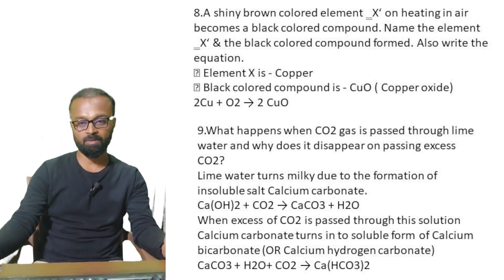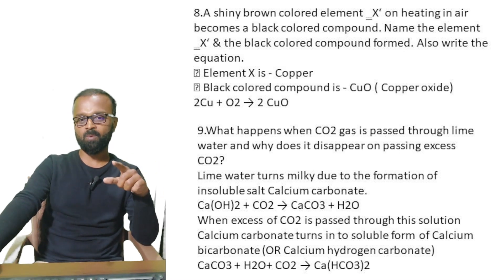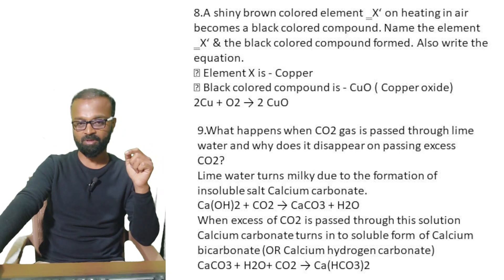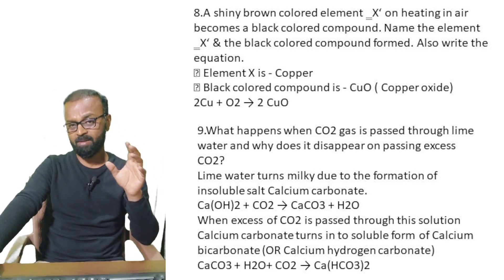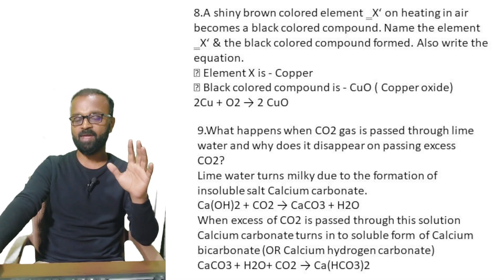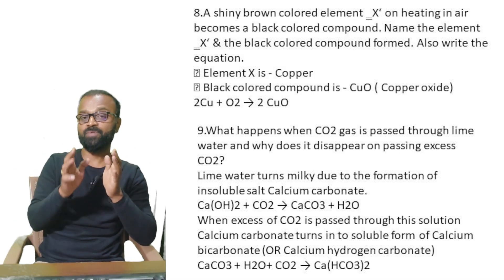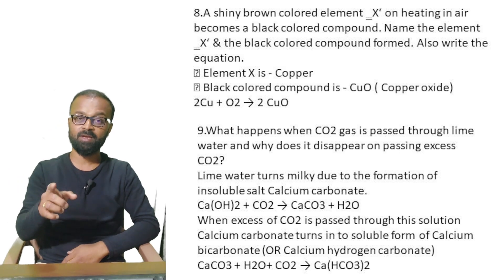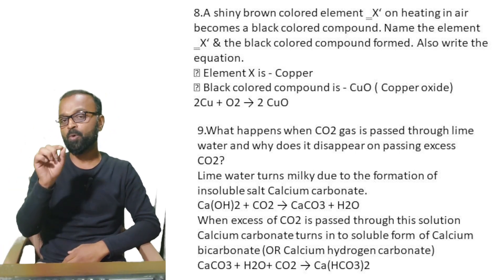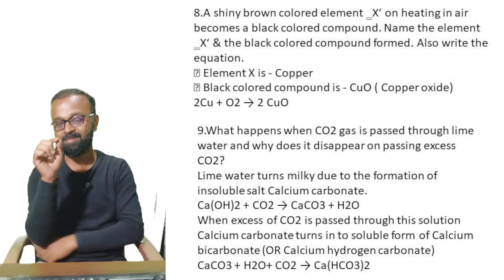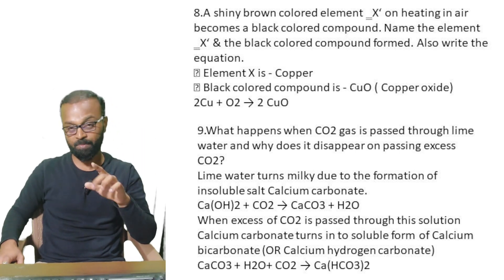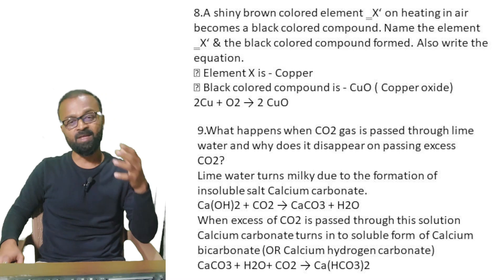When carbon dioxide is passed through lime water — calcium hydroxide — it forms a white precipitate of calcium carbonate along with water. If you continue passing excess carbon dioxide, it reacts again with the calcium carbonate to form calcium hydrogen carbonate, Ca(HCO3)2. At that point, the white precipitate fades away or diminishes. Whenever a question involves a chemical equation, please write it — even if not explicitly asked — as it helps you gain more marks.